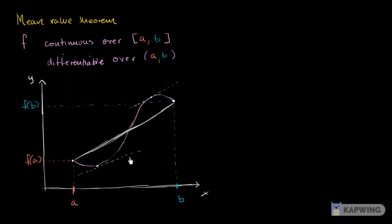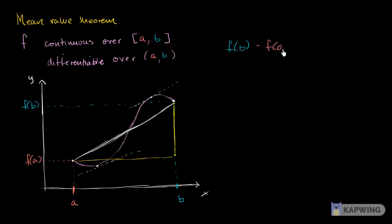The average slope over this interval — the slope of the secant line — is going to be our change in y over our change in x. Our change in y is f of b minus f of a, and that is going to be over our change in x, over b minus a.